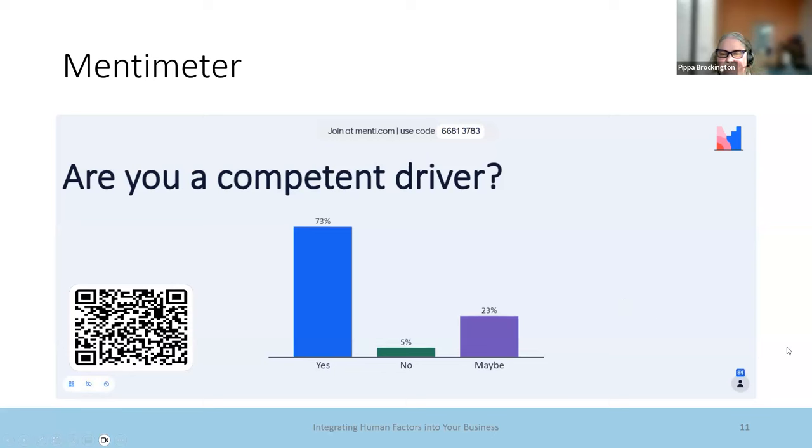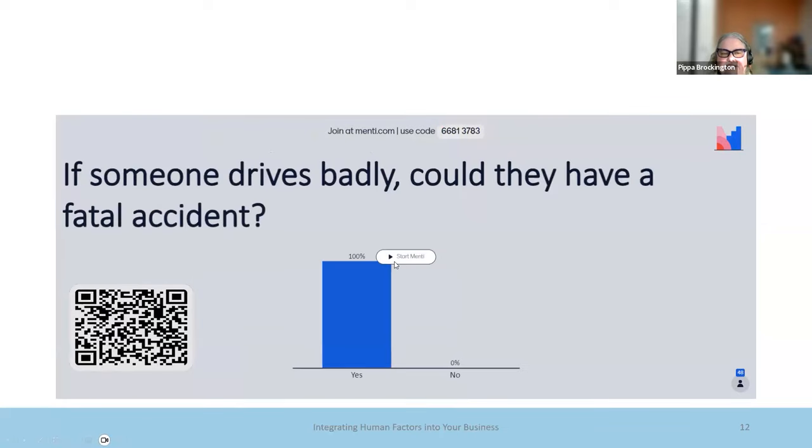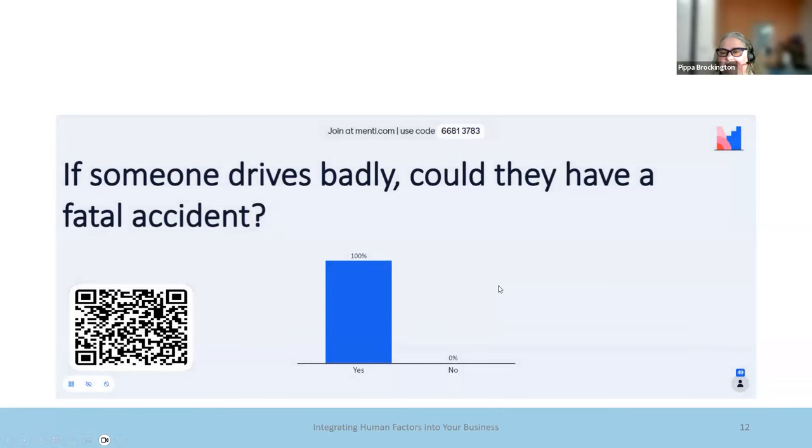I've never been to a site where there hasn't been some reliance on this thing called competence as part of risk reduction measures. So it's really, I want to explore what that means a little bit. This is why I'm asking this question. I've got another question for you though. So let's start that one off. So we've got 72% of you think you can think you're competent. 23% are saying maybe, 5% are saying no, which might possibly be because they're not drivers or they really don't want to be caught out. Okay. So the next question that I'm going to start up now is this one. If someone drives badly, do you believe they could have a fatal accident? So could they have an accident? Could somebody die as a result of it or possibly even more than one person?